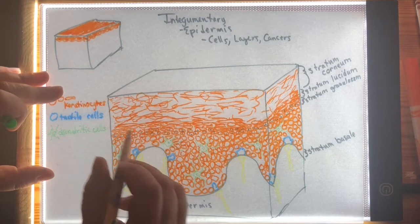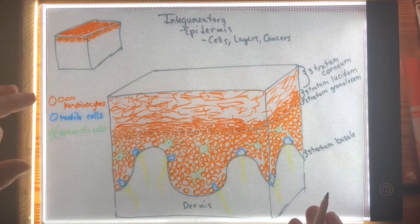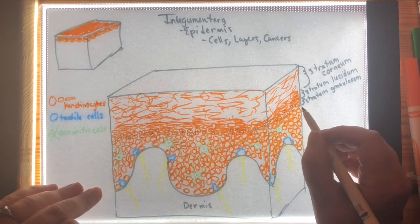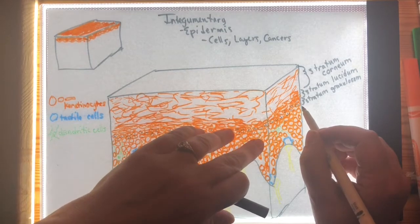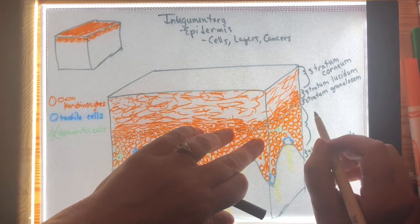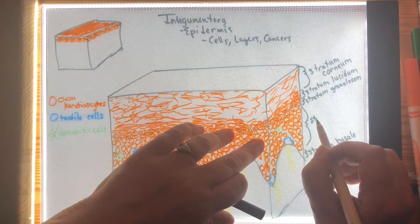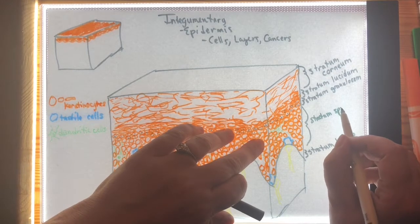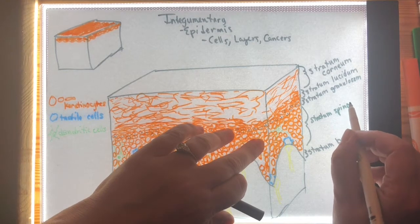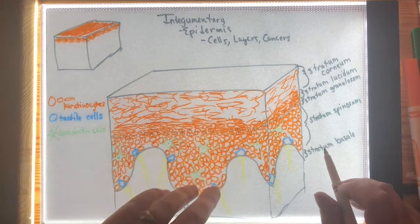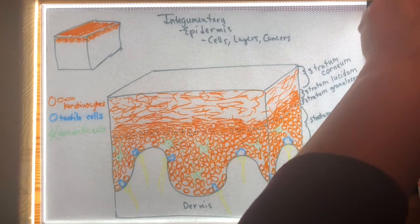This layer is called the stratum spinosum, so-called because it has these spiny-looking structures in it — which would be the dendritic cells. Everything else in this cell layer is a metabolically active, still-living keratinocyte that hasn't yet started its trajectory through the stratum granulosum.